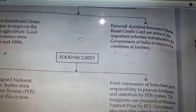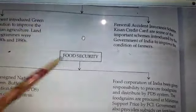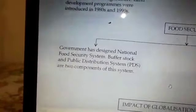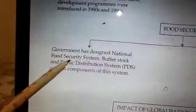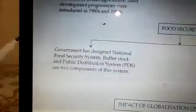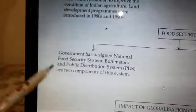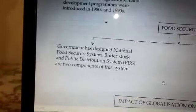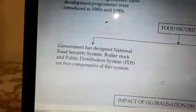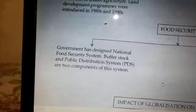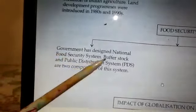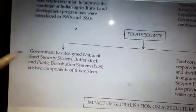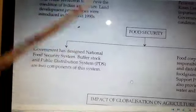Moving to the next section — food security. The government designed two basic systems: buffer stock and the Public Distribution System. Buffer stock means the government purchases grains from farmers and keeps them for calamities or other emergencies. The government then distributes this to poor people through the Public Distribution System at a quite cheaper rate. These two systems are the components of food security.